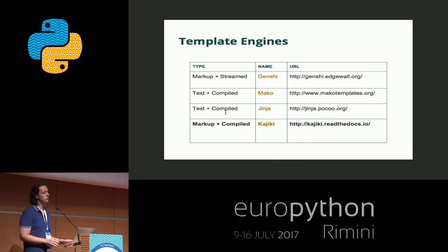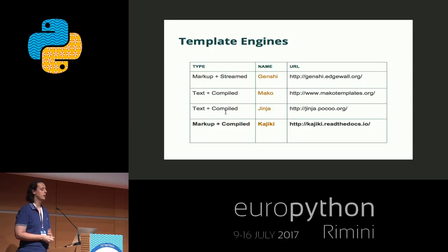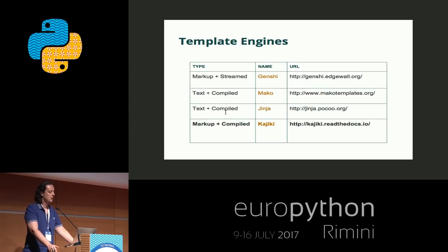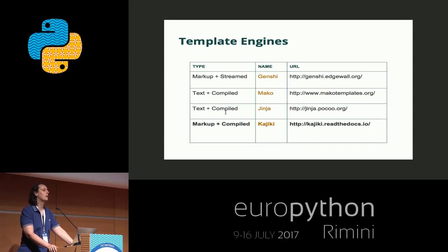Let's have a global look over the template engines that exist in Python. The most common ones are probably Mako and Jinja, and Django templates, even though it's never listed as a template engine, as it's actually more a part of Django itself. The properties of those template engines are usually divided in two kinds: whether the syntax is markup-based or free text.